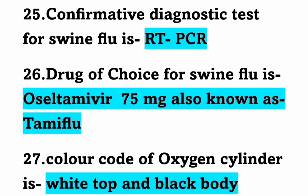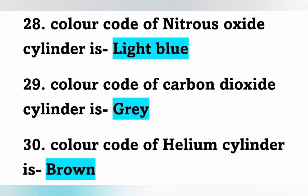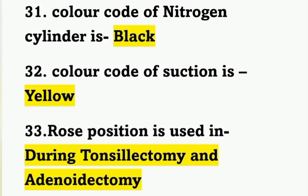Color code of oxygen cylinder: white top and black body. Color code of nitrous oxide cylinder: light blue. Color code of carbon dioxide cylinder: gray. Color code of helium cylinder: brown. Color code of nitrogen cylinder: black. Color code for suctioning: yellow.